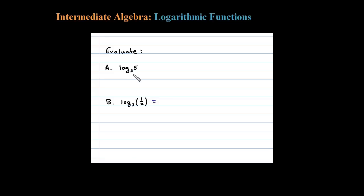Here we're asked to evaluate these two logarithms. If we use the definition, we have to ask ourselves: three to what power will give me five? Well, five is not a perfect power of three. Three to the first power is three, three squared is nine, so the answer is going to be somewhere between one and two.